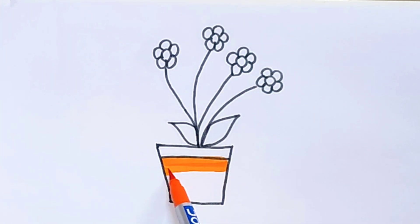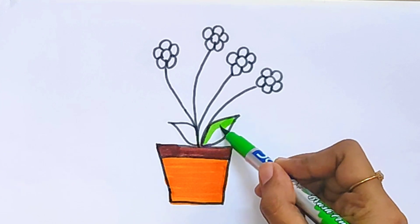Let's color them now. Orange color. Brown color. Light green color for the leaves.